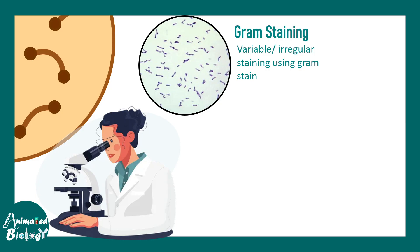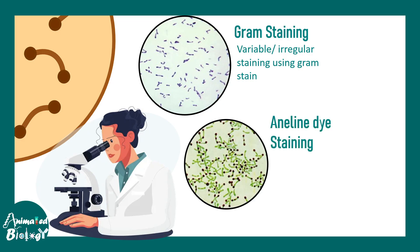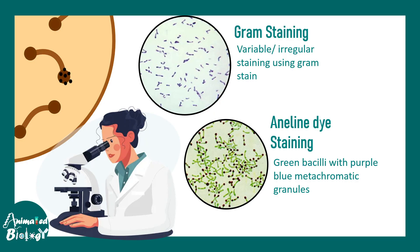There are better staining methods — gram staining is often variable for this bacteria, which is why aniline dye staining is much more reliable. In this case, the green bacilli with purple-blue metachromatic granules are characteristic of Corynebacterium diphtheriae. The purple staining is due to the metachromatic granules of this bacteria.